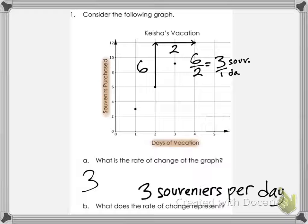When it asks what does the rate of change represent, just look at your x and y axis. It says days of vacation is the x-axis and souvenirs purchased is the y-axis. So that means 3 souvenirs are purchased every single day. That is the rate of change.